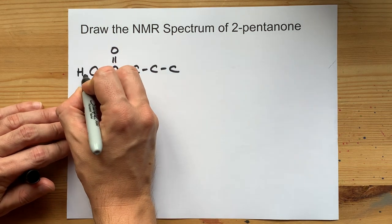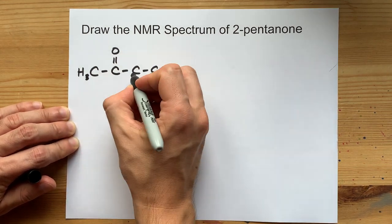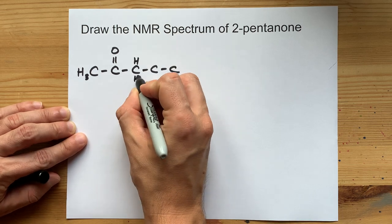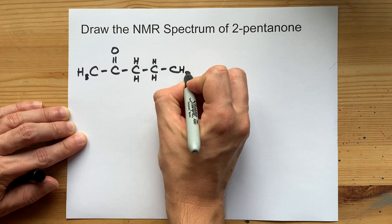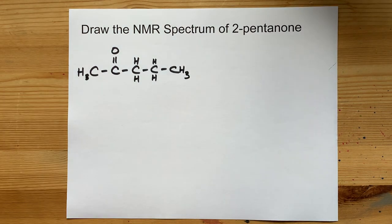That means we have 3 hydrogens on that carbon there, we have 2 hydrogens on that carbon, 2 hydrogens on this carbon, and 3 hydrogens on that one.